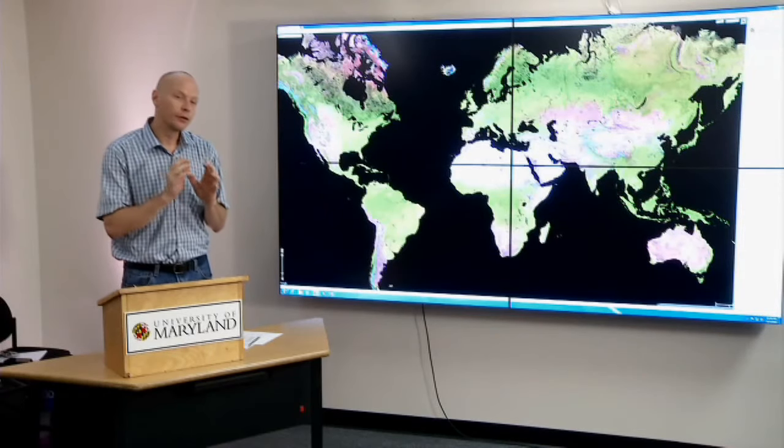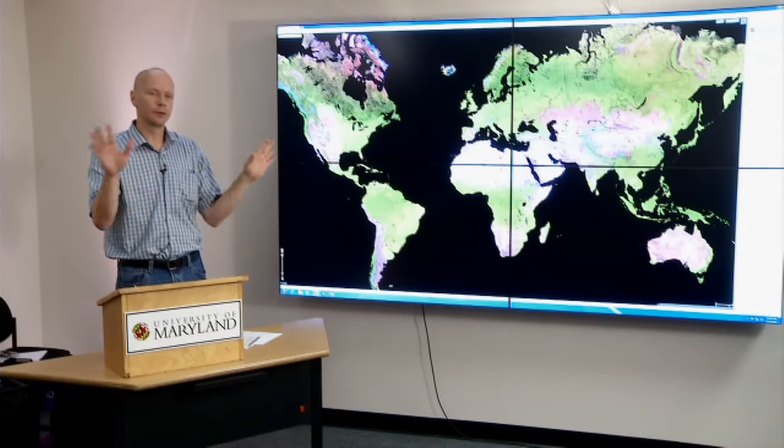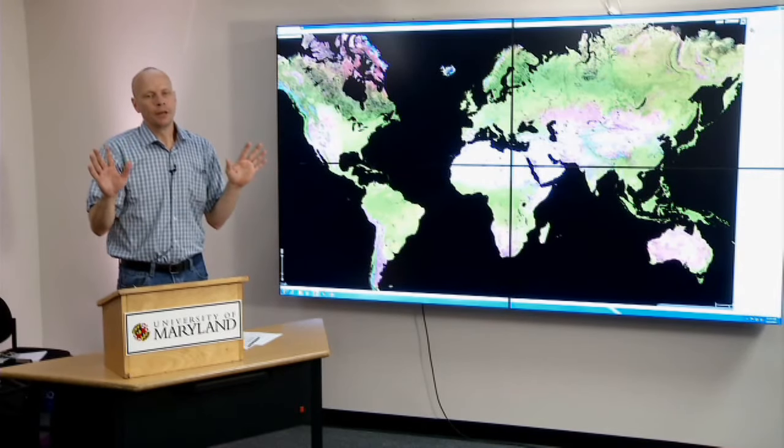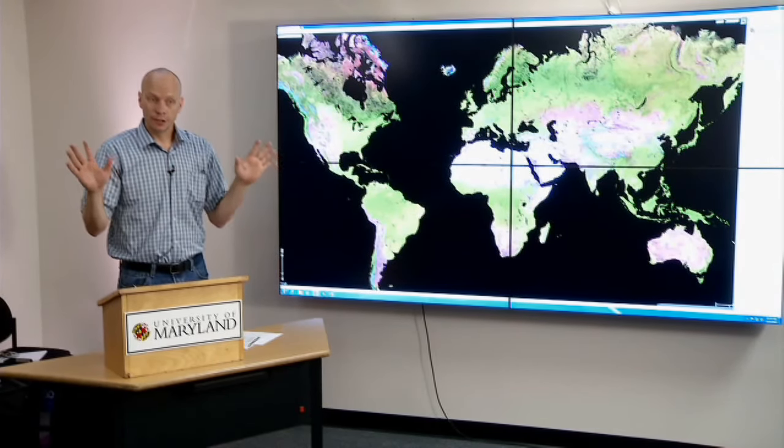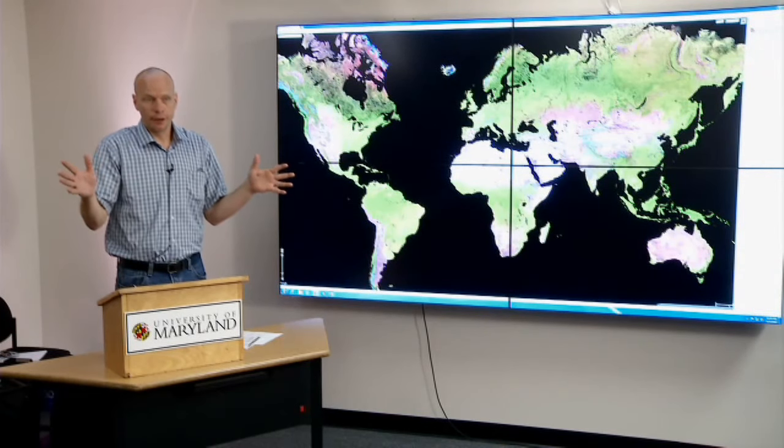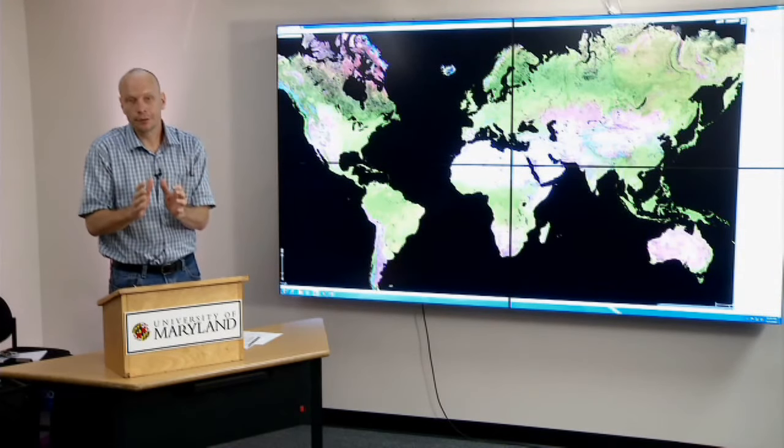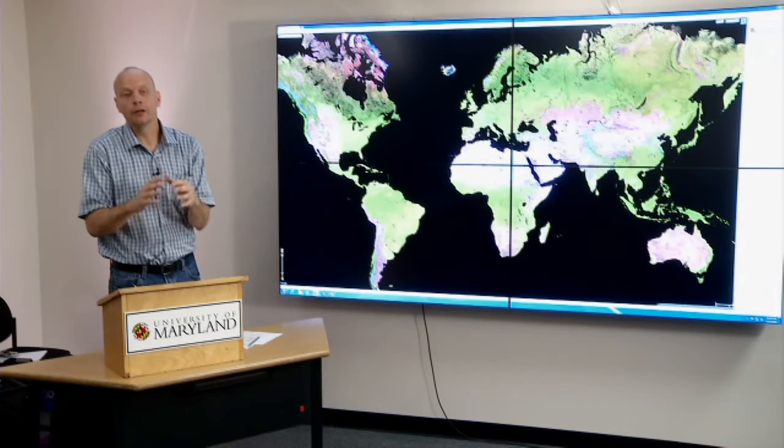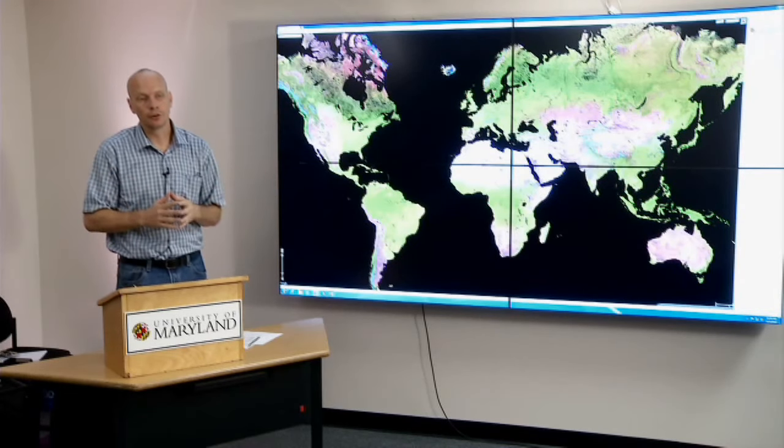And what we like about it, if we're working at 30 meters globally, our history has been to work at global scale. And you get a globally consistent product, and you can say what's happening to the earth in its entirety. But with 30 meter, we can cut out any particular place, and it should be locally relevant. So we have a globally consistent and locally relevant product.